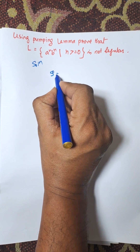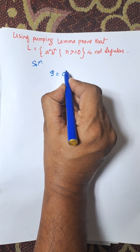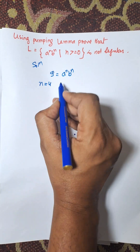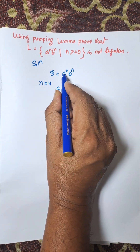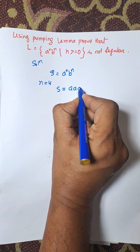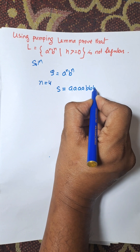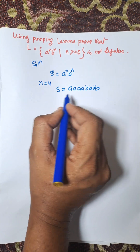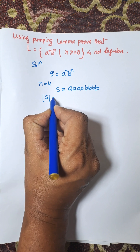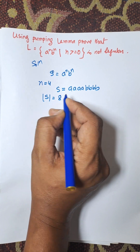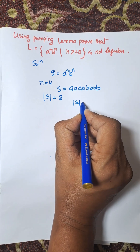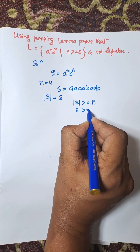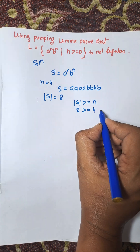Let A equal to a to the power n, b to the power n. Suppose n is equal to 4. Now A is A, A, A, A, B, B, B, B. We can consider n equal to 3 or n equal to 2 also. Here the length of A is equal to 8. The length of A must be greater than or equal to n, and 8 is greater than or equal to 4, which is true.